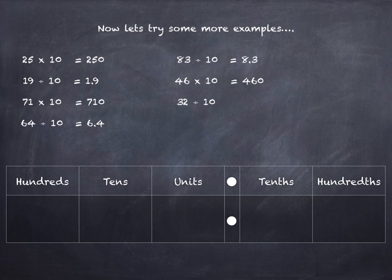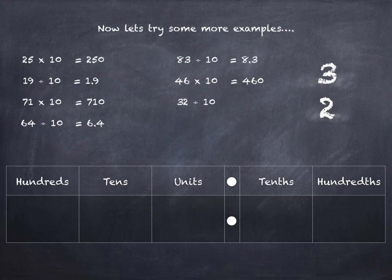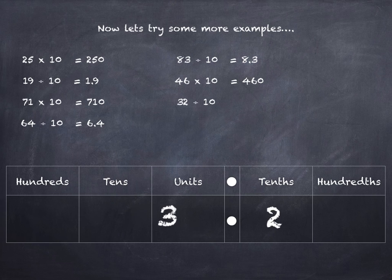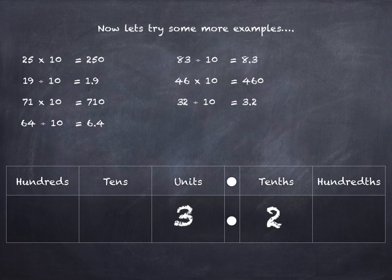32 divided by 10. 32 into the tens and units columns. Dividing so we're going to the right. 32 divided by 10 is 3.2.